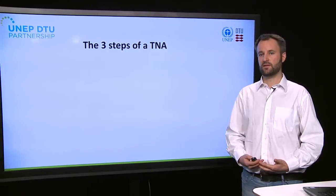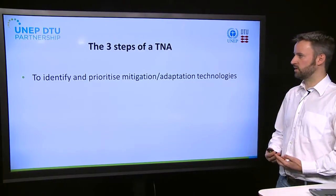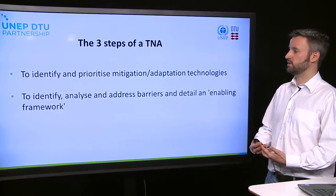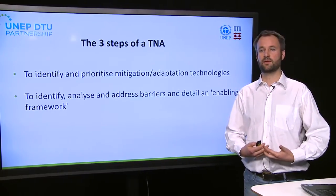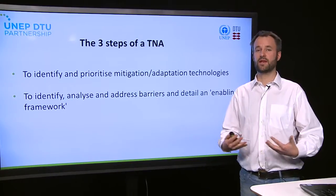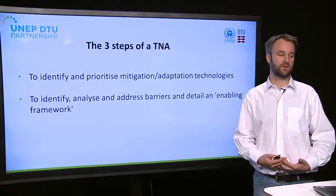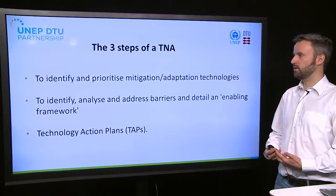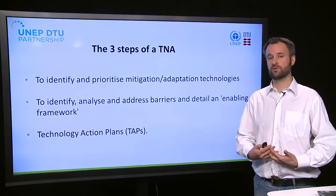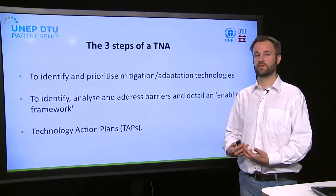The three key steps in a TNA. Firstly, to identify and prioritize the mitigation and adaptation technologies. The second step is to identify, analyze, and address the barriers to these technologies and to propose measures that constitute what we refer to as an enabling framework — i.e., policies, interventions, and measures to overcome these specific barriers. The third step is the Technology Action Plan, which is a project-based proposal to get to the next stage. These three steps correspond to the three main deliverables detailed in the country agreements.